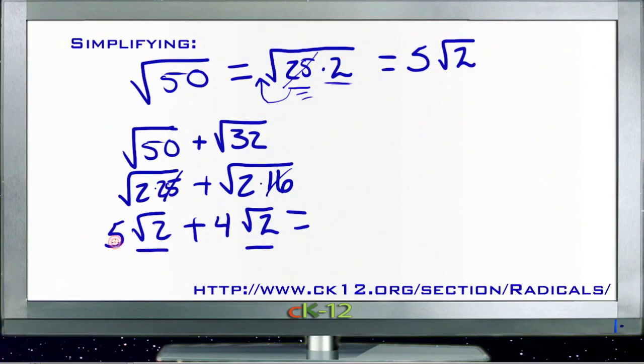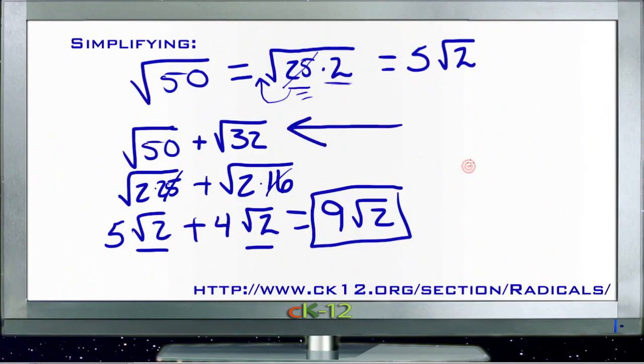Now we can combine them because they have the same square root. Five roots of 2 plus 4 roots of 2 is 9 roots of 2. So we found a way to take two numbers that otherwise couldn't be combined because they're different roots and combine them very cleanly just by simplifying them so they had the same number under the square root symbol.